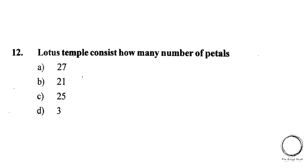Next, the Lotus Temple consists of how many petals? A. 27, B. 21, C. 25, D. 3. The right answer is A, 27.